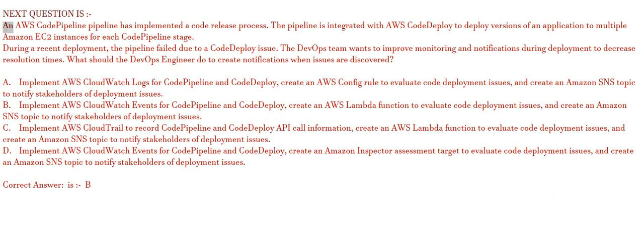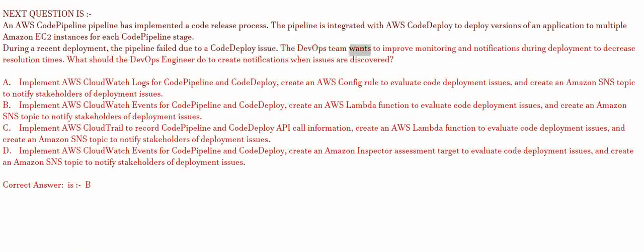An AWS CodePipeline pipeline has implemented a code release process. The pipeline is integrated with AWS CodeDeploy to deploy versions of an application to multiple Amazon EC2 instances for each CodePipeline stage. During a recent deployment, the pipeline failed due to a CodeDeploy issue. The DevOps team wants to improve monitoring and notifications during deployment to decrease resolution times. What should the DevOps engineer do to create notifications when issues are discovered?